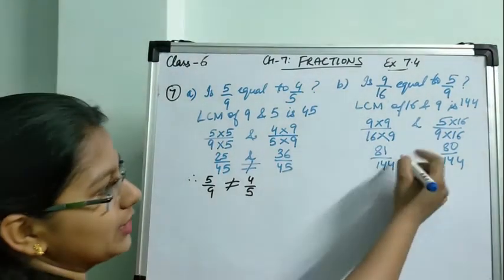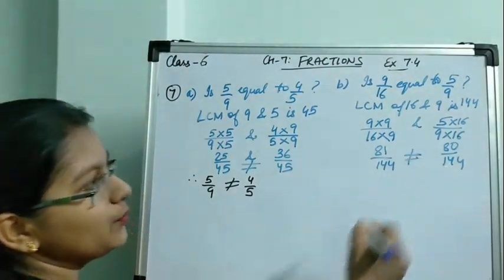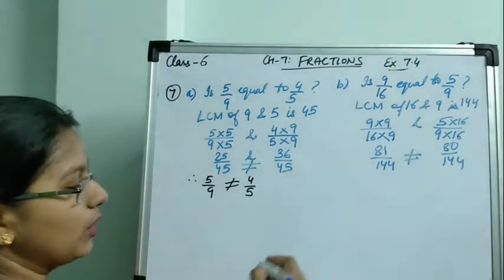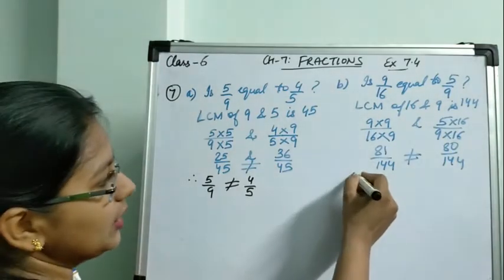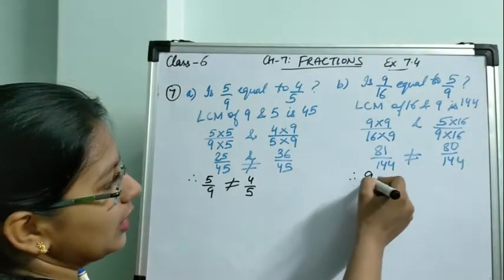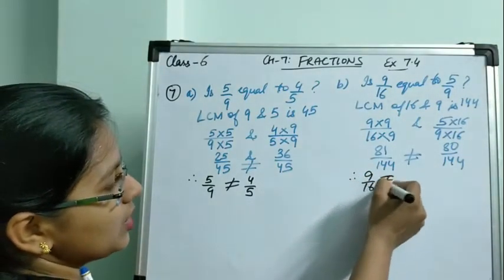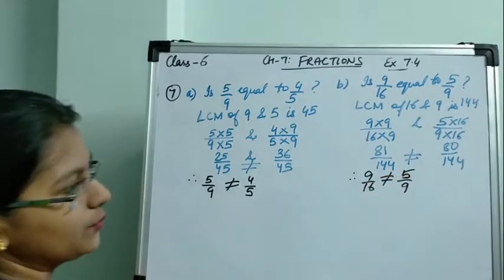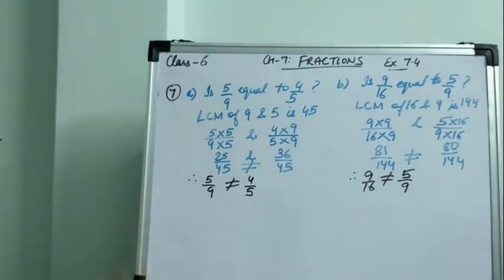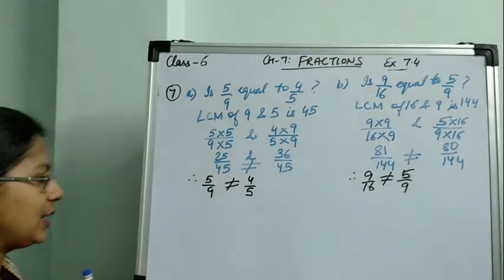This is more by only 1, but they are still not equal. Therefore, 9 by 16 is not equal to 5 by 9. This is the symbol for not equal. Similarly, we can check for Part C.